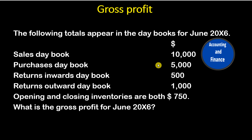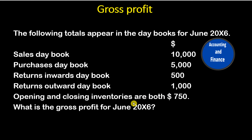The following totals appear in the daybooks for June 20x6: Sales daybook, $10,000. Purchases daybook, $5,000. Returns inwards daybook, $500. Returns outwards daybook, $1,000. Opening and closing inventories are both $750. What is the gross profit for June 20x6?